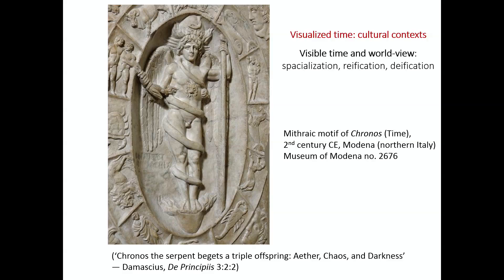There are various indications that this image represents Kronos. The snake is a symbol of time, as we have in the quote at the bottom: Kronos, the serpent. He is inside an egg-shaped form, which is associated with time — according to various traditions, time created a primordial egg out of which the world was then created. You also have the 12 signs of the zodiac all around him. This then is an image of the god of time. The god of time is attested also very well in Greek and Roman literature.